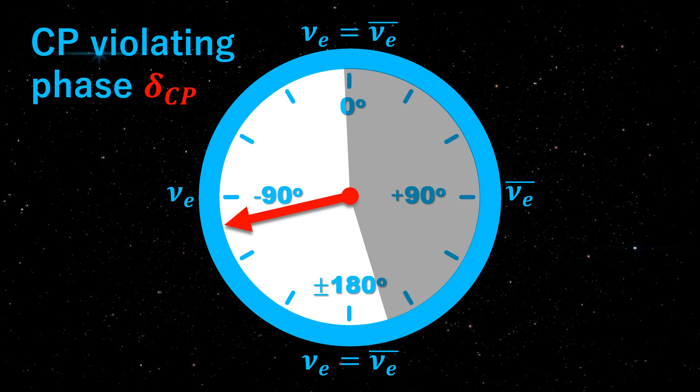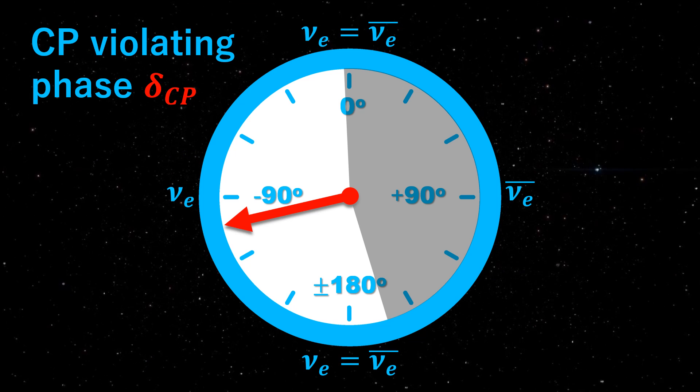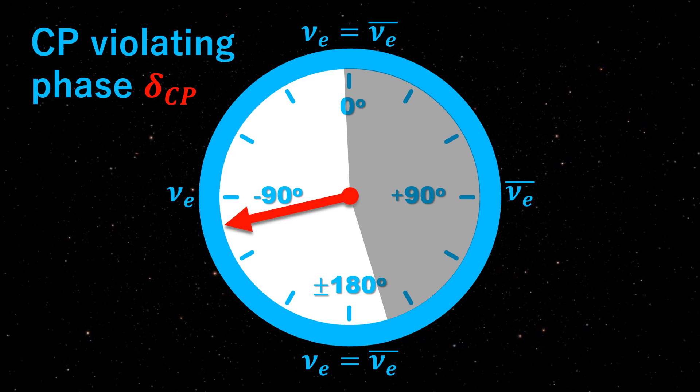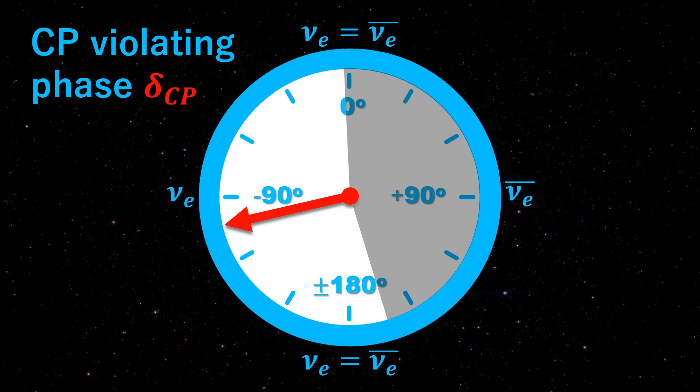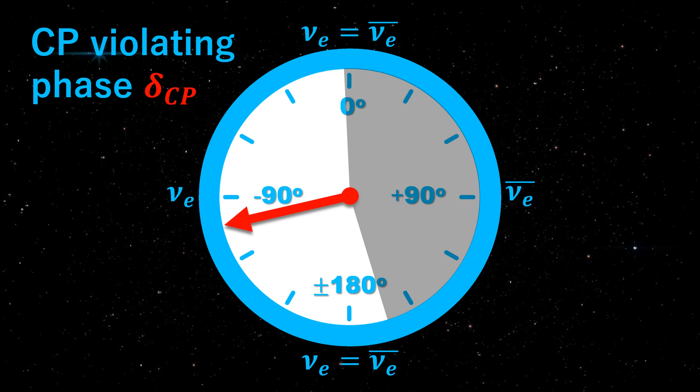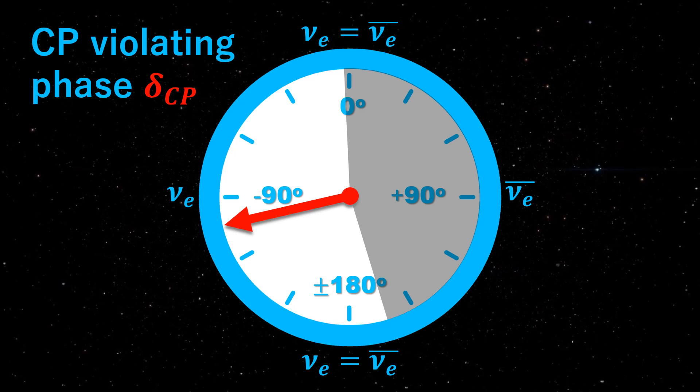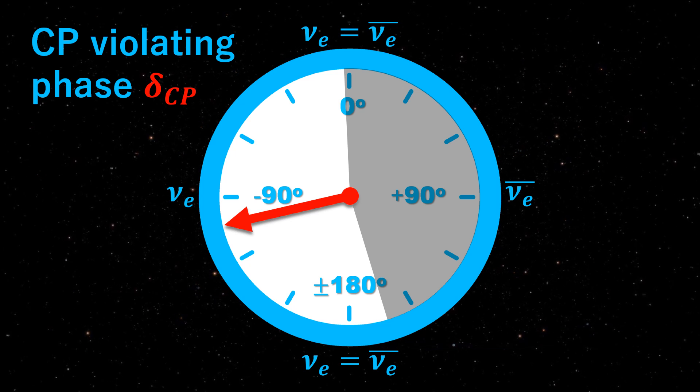The effective CP violation is maximally observed at delta equals plus or minus 90 degrees. For that case, HK is expected to discover non-zero size of the violation of the CP symmetry at 8 sigma significance in 10 years of operation.